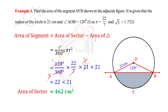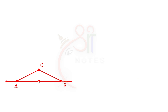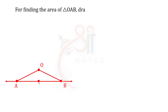Next, we need to find the area of triangle OAB. For this, we draw OM perpendicular to AB from center O to chord AB. This creates two right-angled triangles. Since OM is perpendicular to AB, AB is divided into two equal parts, and we can apply trigonometry to a right angle triangle.